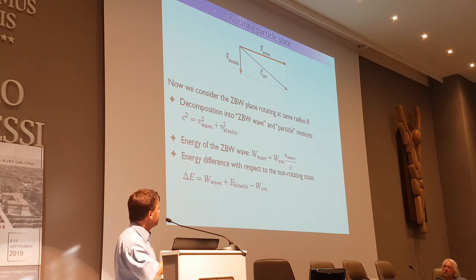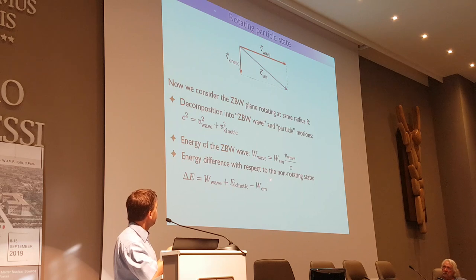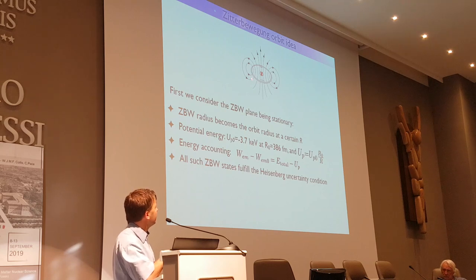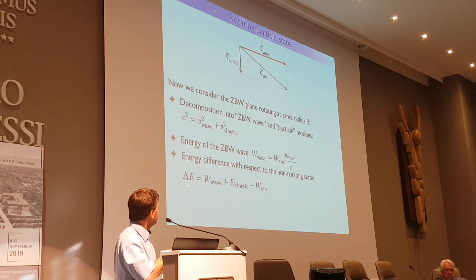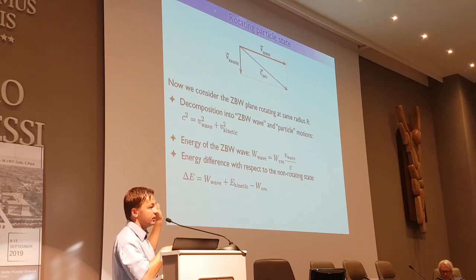The electromagnetic energy of the Zitterbewegung wave is proportional to the wave speed, so this energy is reduced relative to the standstill case because the speed in the Zitterbewegung direction is less. On the other hand, the electron gains kinetic energy. If we compare the energy of the standstill solution against the rotating solution, the difference — which I call delta E — comes from two terms: the wave energy plus the kinetic energy, minus the energy of the standstill solution.